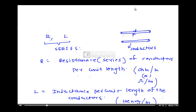Since a conductor has both resistance as well as inductance property, that is why they are in series — we can call them series elements. Similarly, if you observe these two lines, they are separated by a distance. Since the two wires are conductors separated by a very small distance, they are very close to each other — two parallel wires separated by a distance.